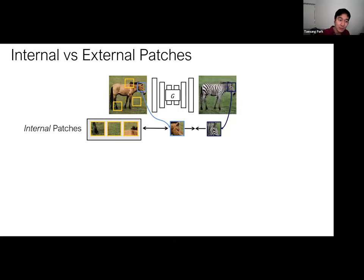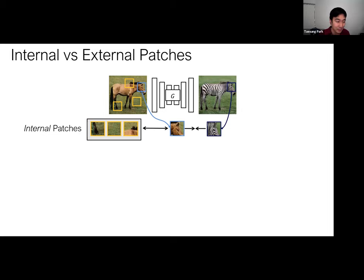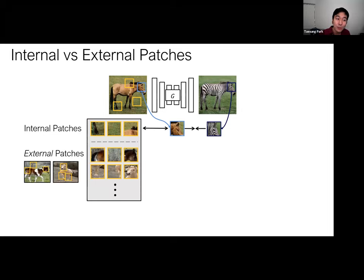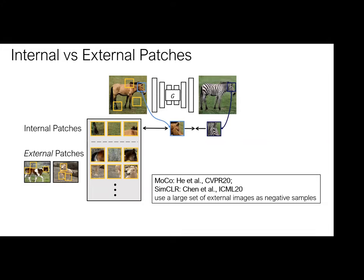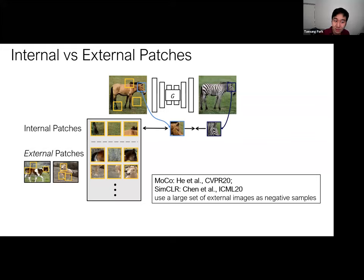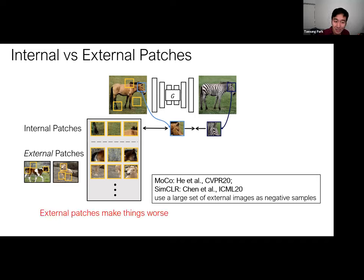Our method replaces the fixed pixel-based cycle loss. It doesn't require a generator or discriminator in the inverse direction, so it trains faster than CycleGAN with a smaller memory footprint. This is helpful when the image translation model is trained jointly with other models in a larger context, like domain adaptation. We also observed that the choice of negative patches is important. By default, we only sample negatives from the same image — internal patches. We can also include patches from other images as external patches, but in representation learning, external negatives sometimes include false negatives, and using them actually worsened output quality.